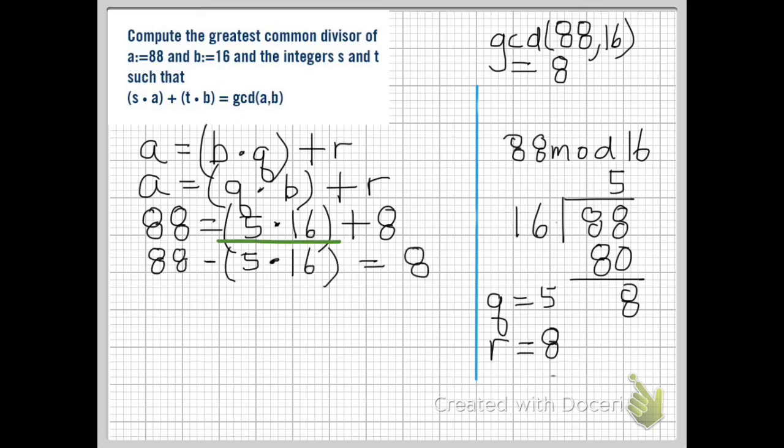We take this expression to the other side. We subtract it from the right-hand side and we subtract it from the left-hand side. And we end up with 88 subtract 5 times 16 equals 8.